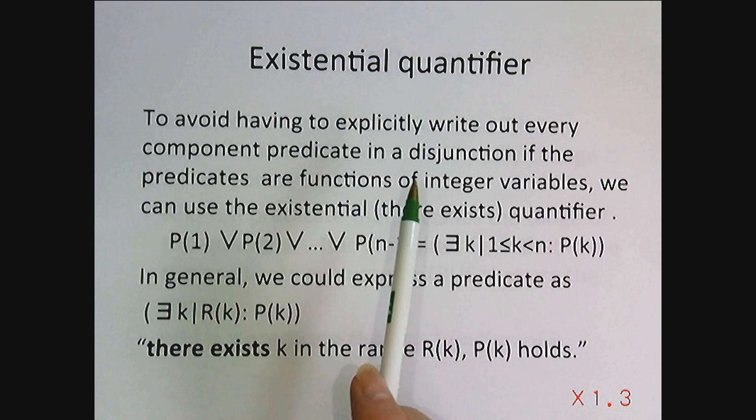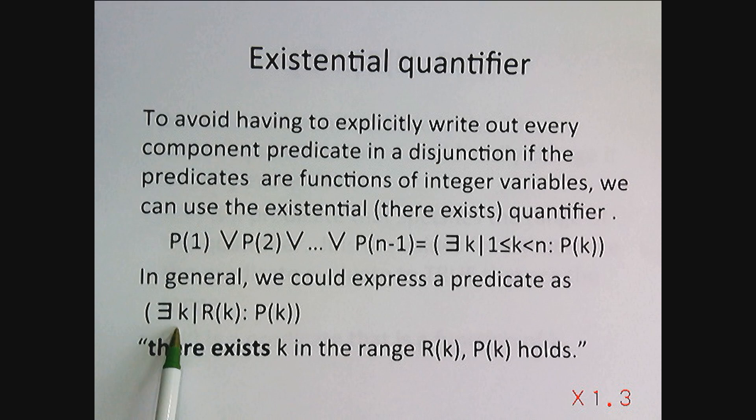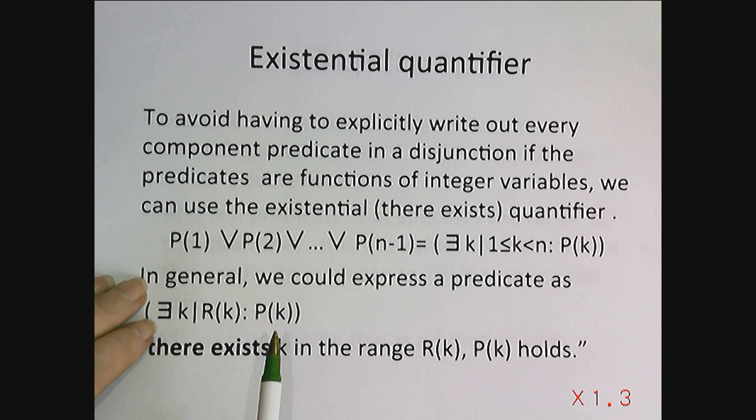If we want to avoid explicitly writing out disjunctions, we're going to be using the existential quantifier. So we could read this as there exists a k in the range R such that P holds or is true.